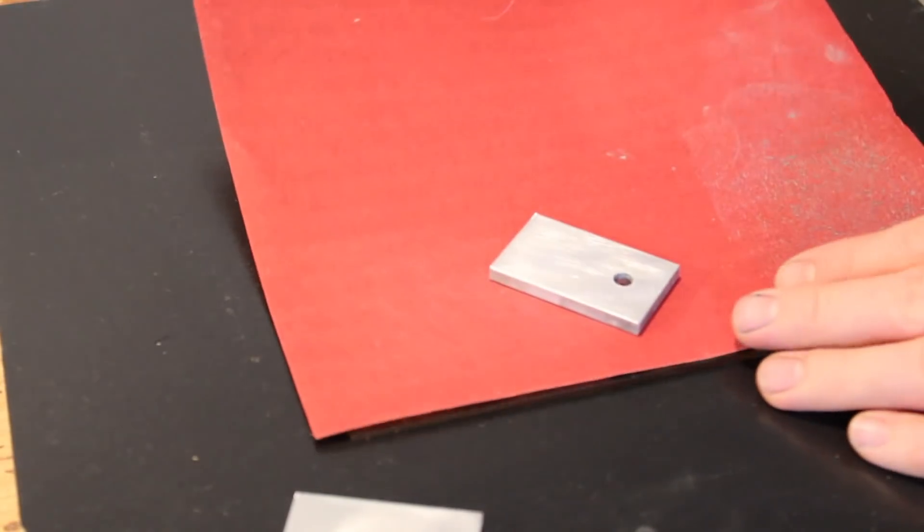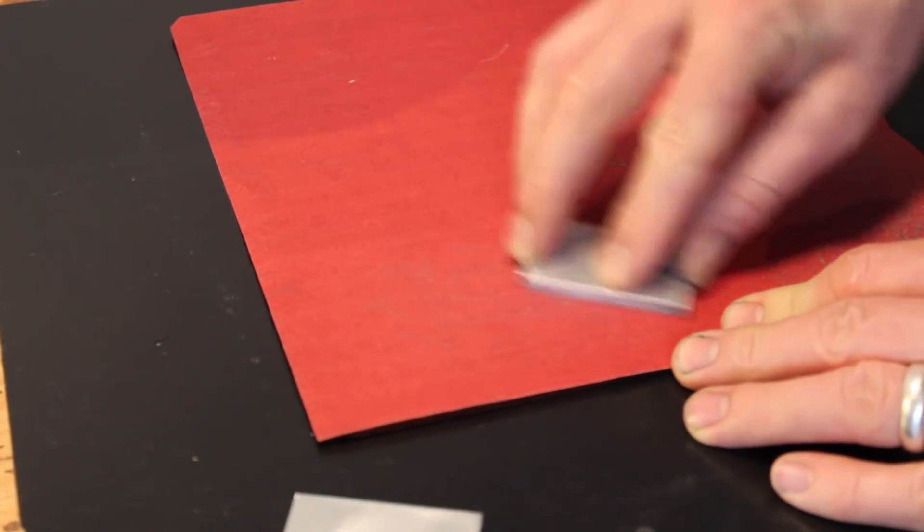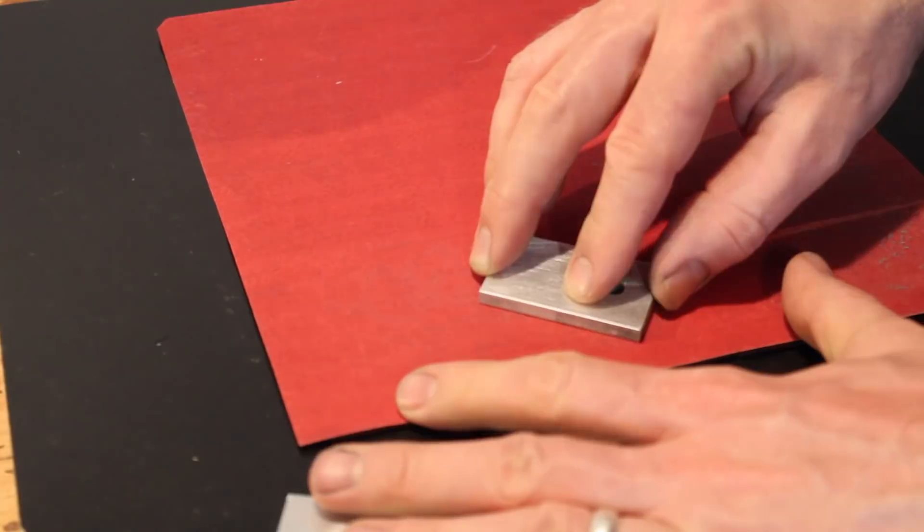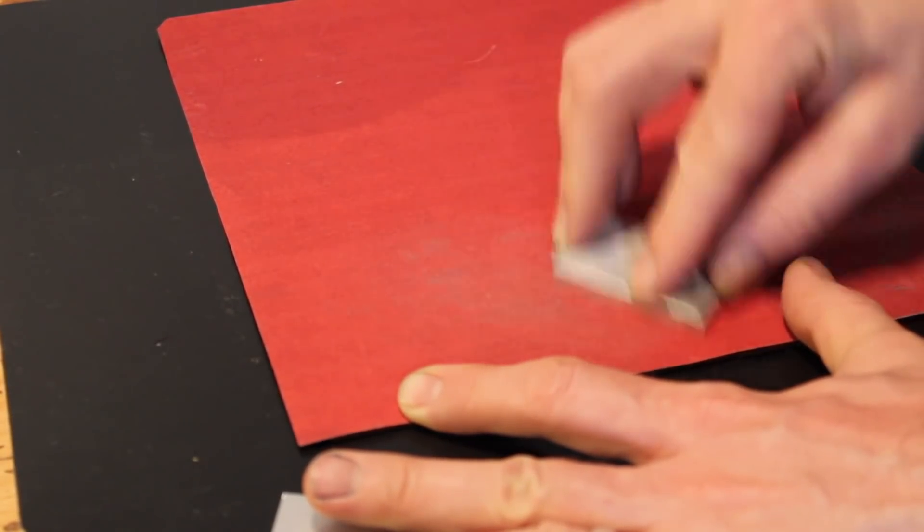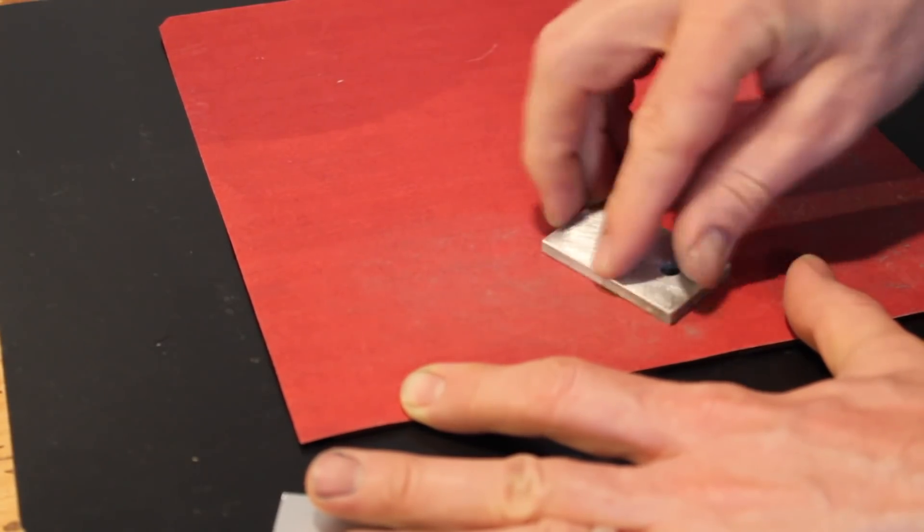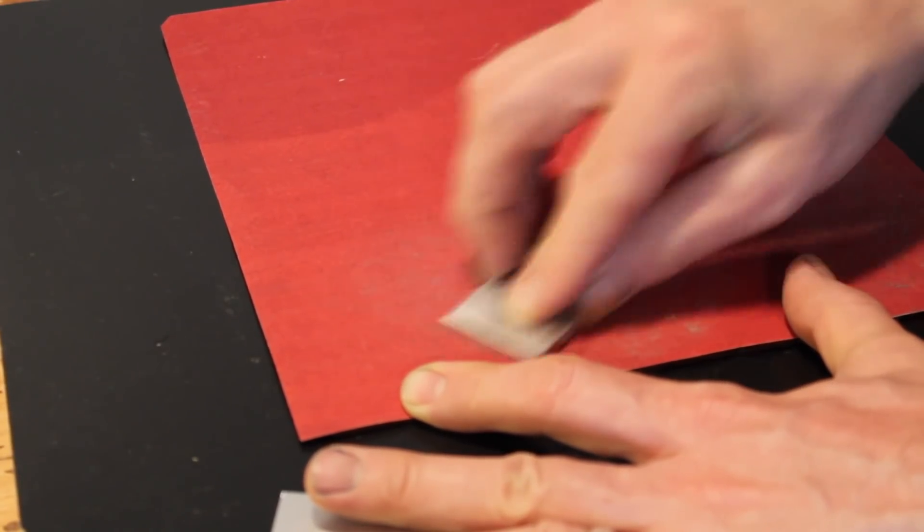The first step in getting your piece ready for anodizing is sanding. Here I started with a 220 grit. After doing this for a little while I realized that linear strokes work better than circular strokes.